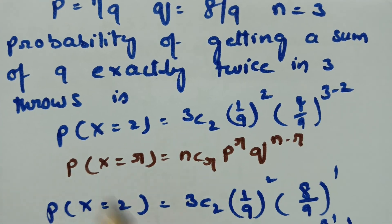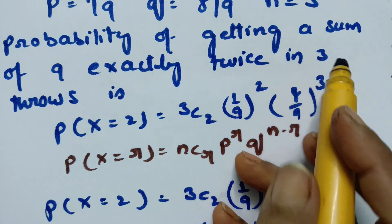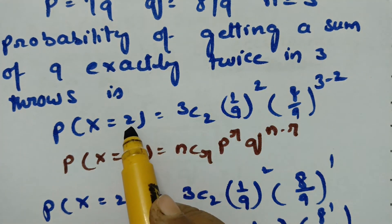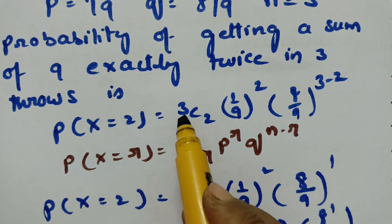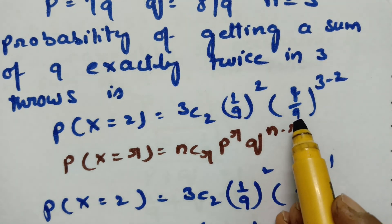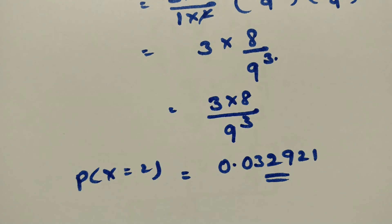So this is the probability of getting a sum of 9 exactly twice in 3 throws. We took R as 2, N is equal to 3, P is equal to 1/9, and Q is equal to 8/9. Substituting in the binomial formula, we got the answer as 0.032921. This is how we solve it. If you read the problem one more time, you can definitely get the solution.